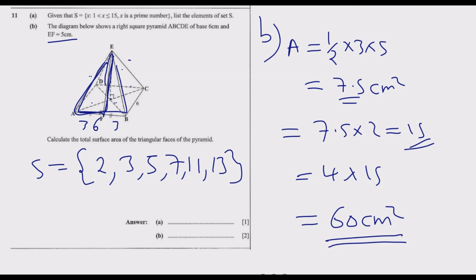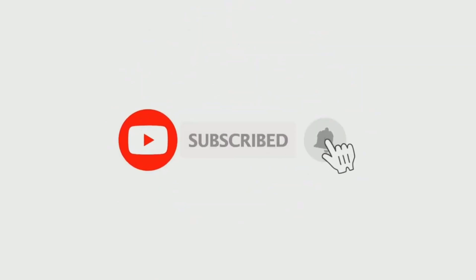Alternatively, 6 multiplied by 5 then divide by 2 gives you 15, then 15 multiplied by 4 gives us 60 centimeters squared. This is how you answer question 11. Thank you for joining me on this episode. Join me as I look at questions 12 and 13 in episode 5.